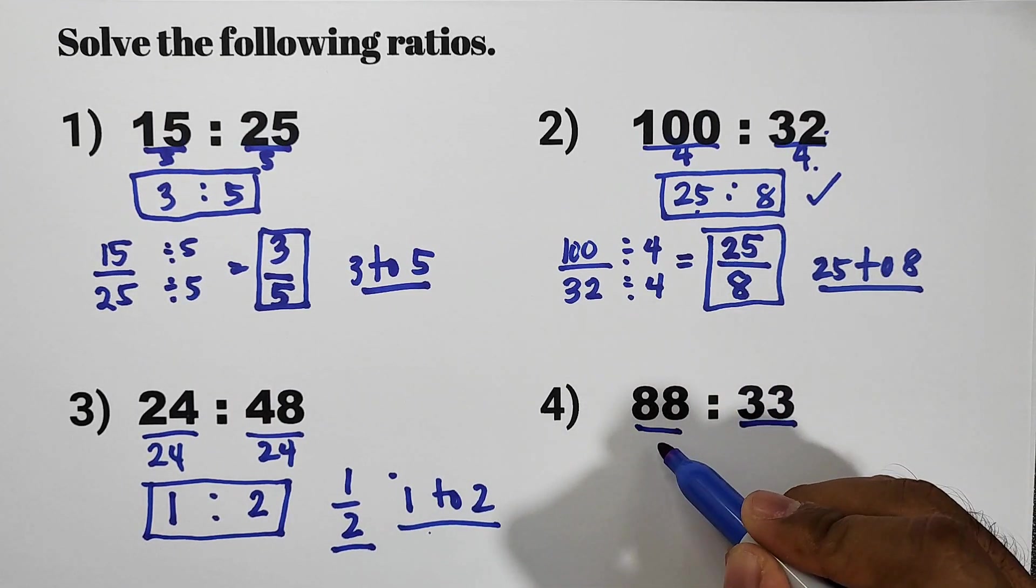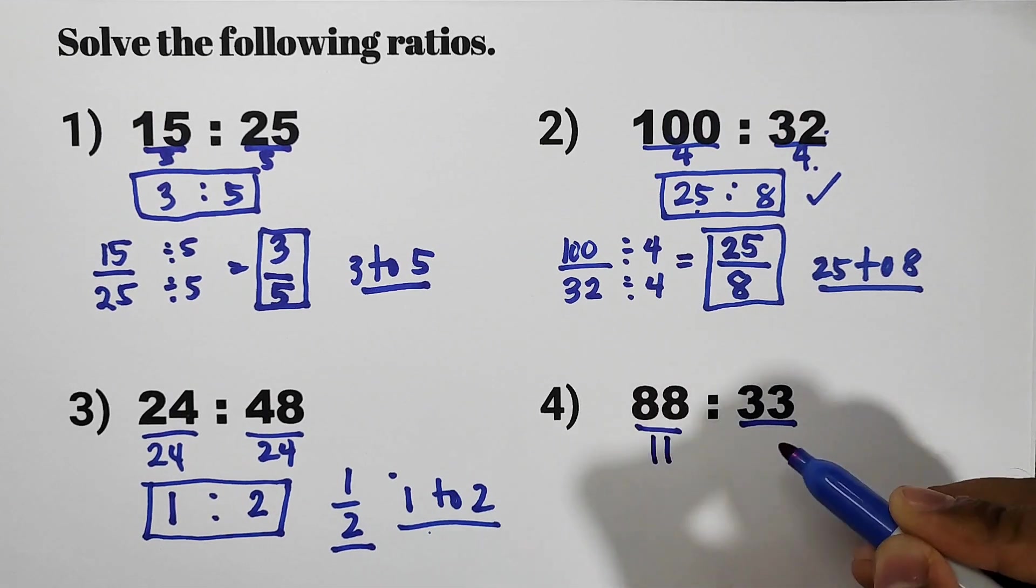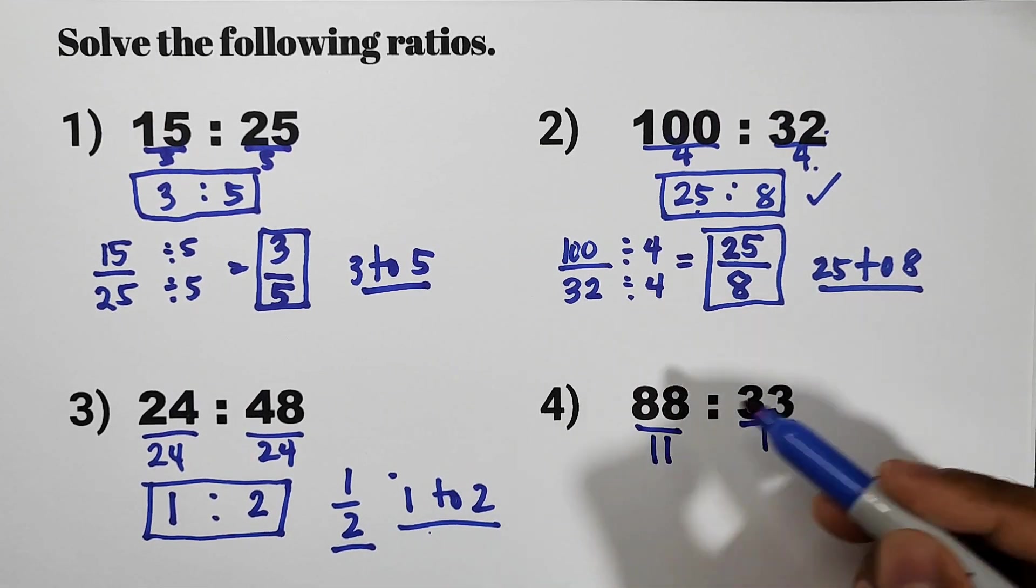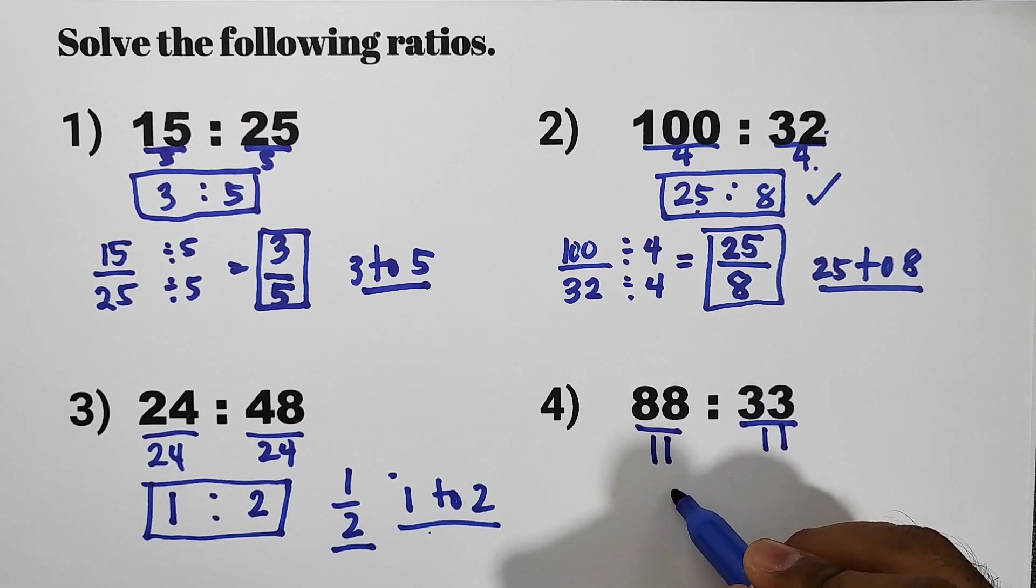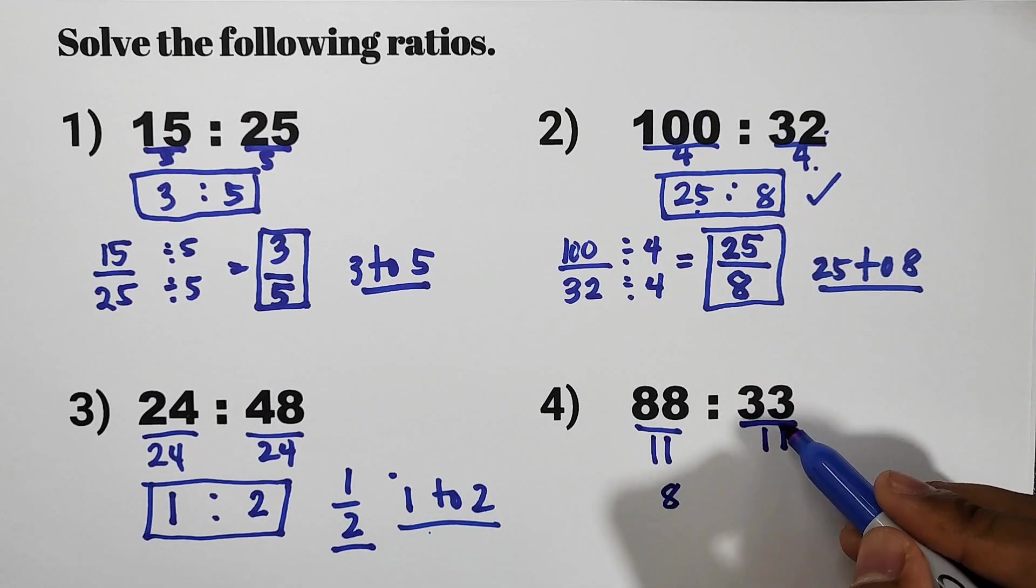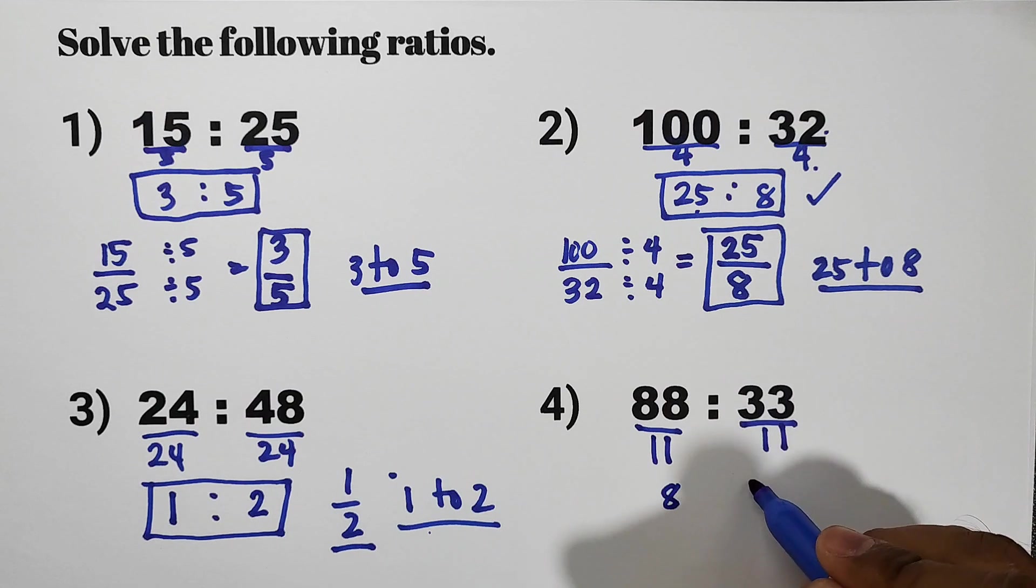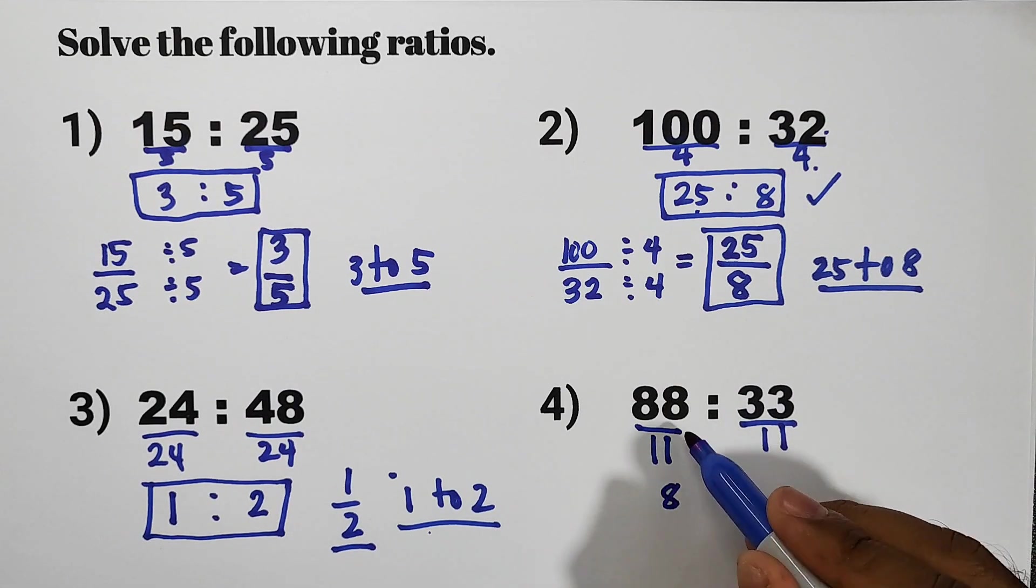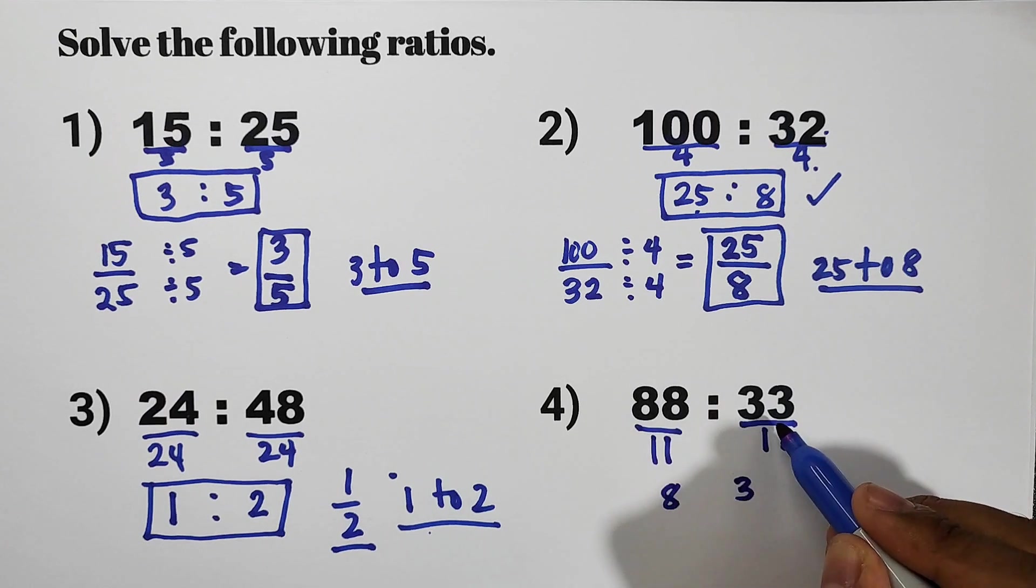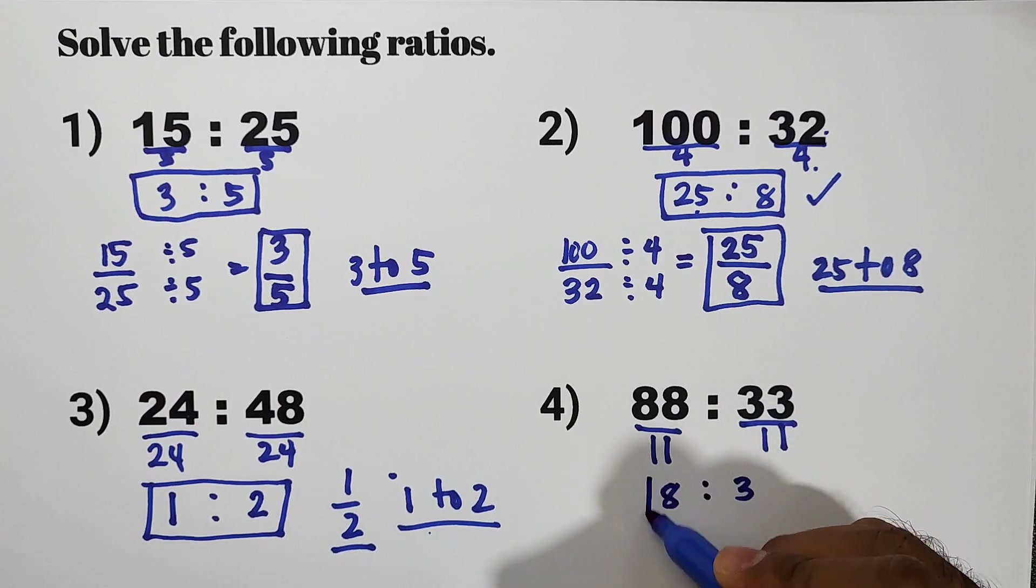Let us divide it by 11 and this one is 11. 88 divided by 11, that is 8. And then 33 divided by 11, that is 3. So the simplest form of this ratio, which is 88 and 33 is 8 to 3.